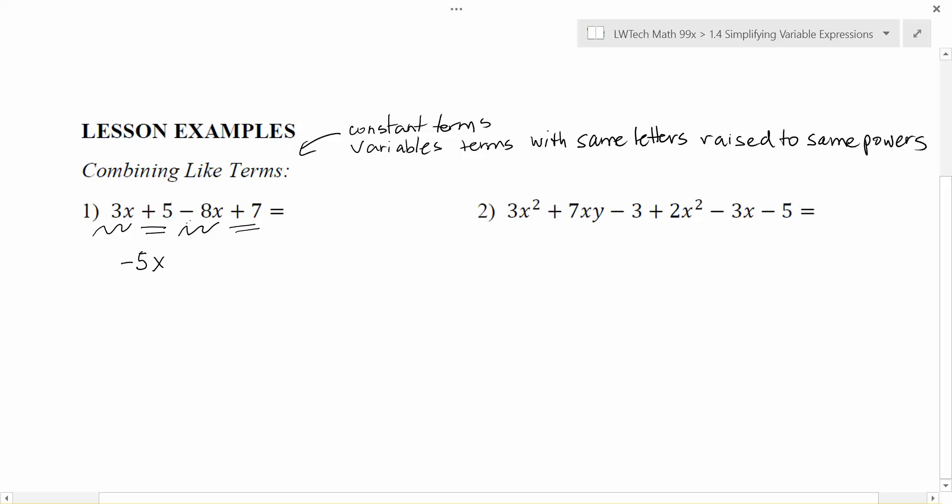I take the 3 and the minus 8 and put those coefficients together and keep the variable along for the ride. Then I can put together the 5 and the 7 gives me a positive 12, so I'm going to come over here and write that as a plus 12. So I still have my separated terms, but any like terms that I had have been combined in the simplest way possible. I can't put this together. I can't put the negative 5 and the 12 together because they do not have the same variable. So that's as far as we can get.